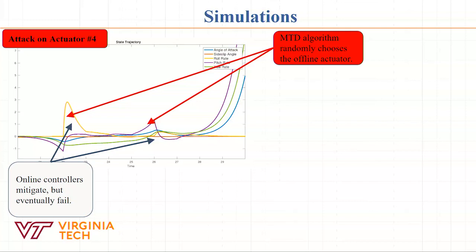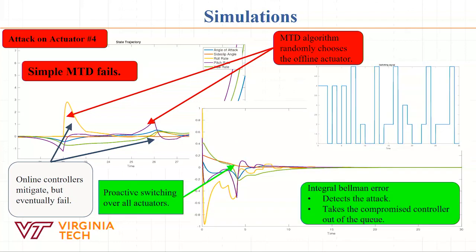If I don't detect the attack and take it out of the queue, then my moving target defense mechanism again randomly chooses the actuator that the attacker took offline - and my system blows up. But what I want to do is take it out of the queue. The proactive switching happens all the time, and then after some time you see in the switching signal that I no longer use number four because I took it out of the queue - but I still increase my uncertainty for the attacker.